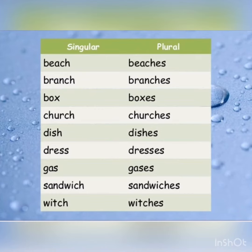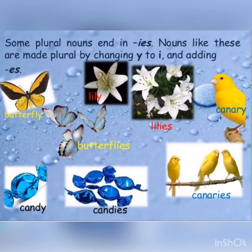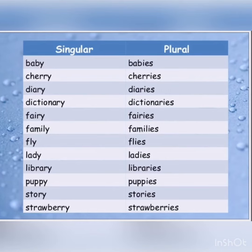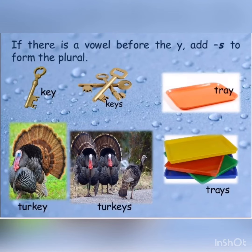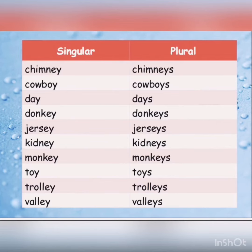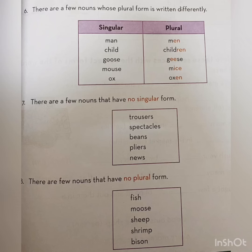More examples of plural nouns ending in '-es' include boxes, churches, and dishes. Some plural nouns end in '-ies', such as babies, cherries, dairies, and dictionaries. However, if there is a vowel before the 'y', simply add 's' — examples include chimneys, cowboys, days, and donkeys.